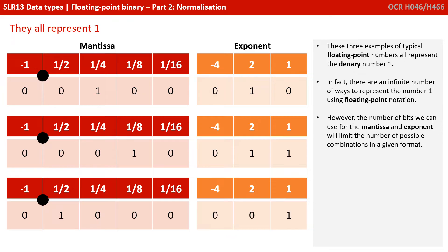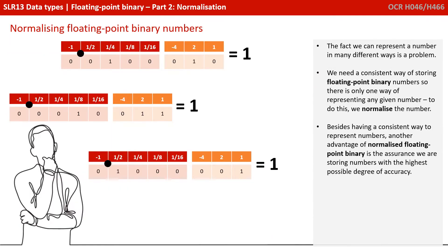These three examples of typical floating-point numbers all represent the denary number 1. In fact, there's an infinite number of ways to represent the number 1 using floating-point notation. However, the number of bits we can use for the mantissa and exponent will limit the number of possible combinations in any given format. The fact we can represent a number in many different ways is clearly a problem — we need a consistent way of storing floating-point binary numbers so there's only one way of representing any given number.